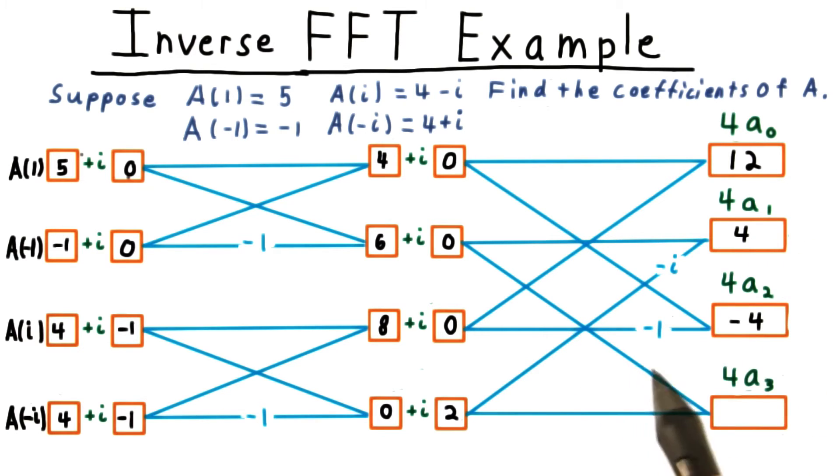For the next one, we multiply the odd term by negative 1, so that gives us negative 4 here.